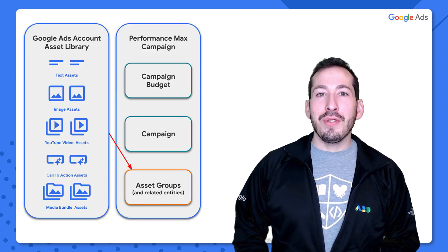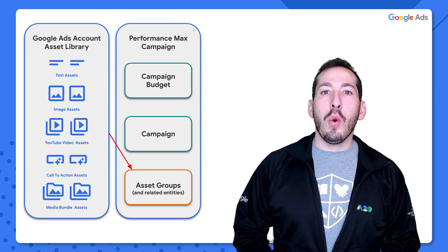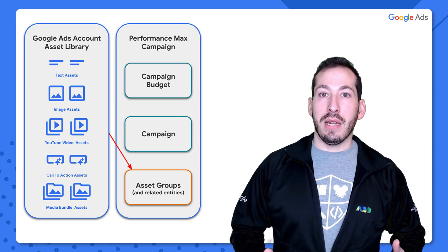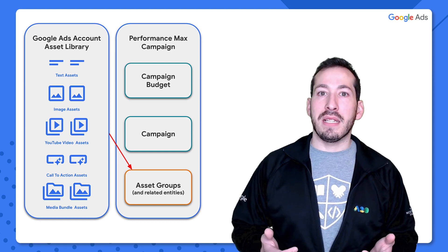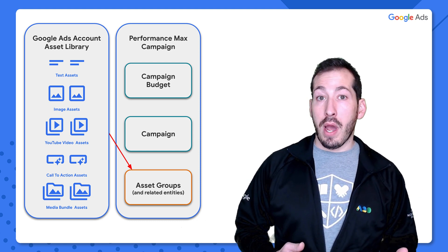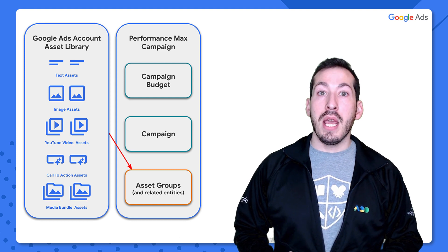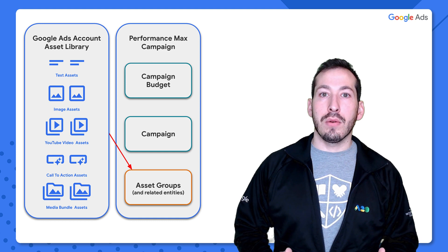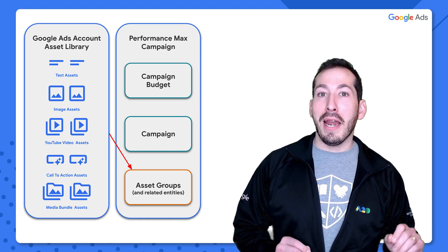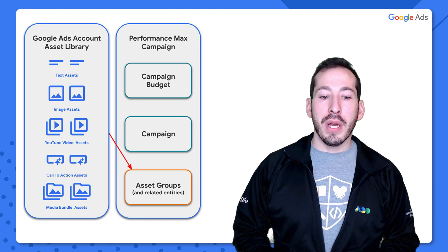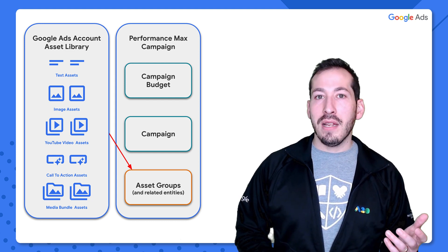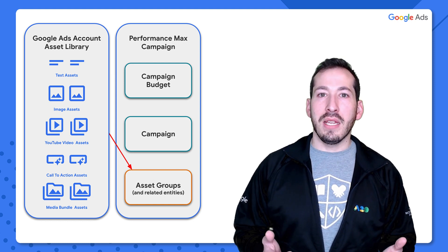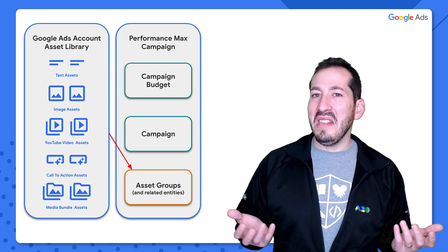If you've been following along in this series, you've probably seen this diagram quite a few times now. It's a very simplistic view of how we represent a valid serving PMAX campaign. In the last episode, we covered the campaign and campaign budget. In this episode, we're going to cover the asset group and related entities. As you can see, we're attaching our assets to our asset group. But let's look at this in a more realistic view to get an idea of what an asset group actually is.